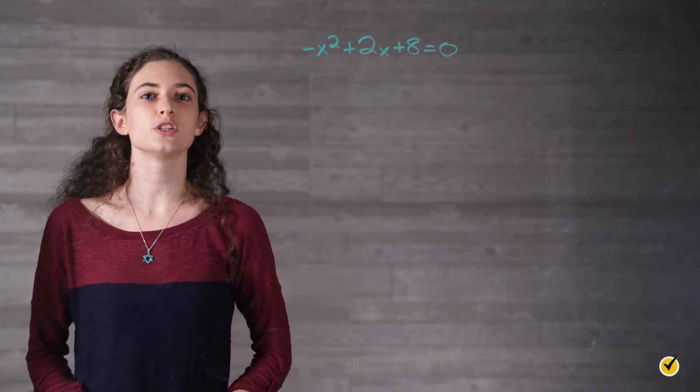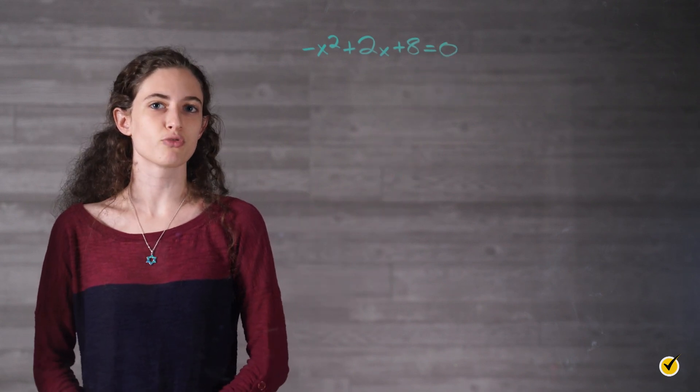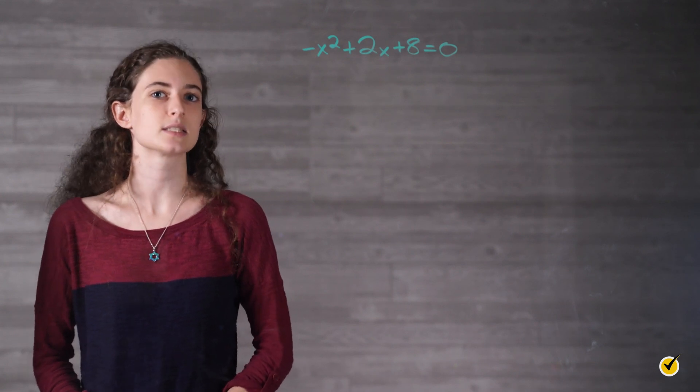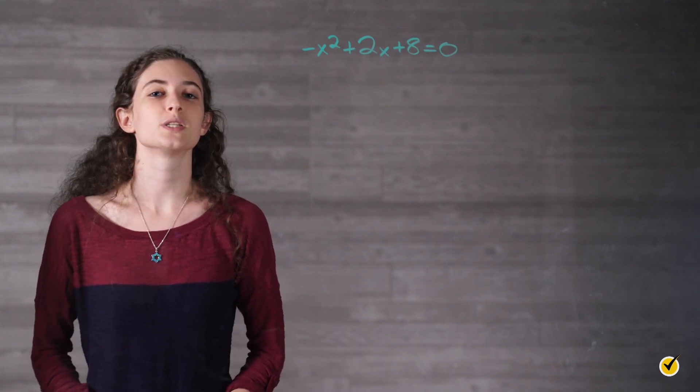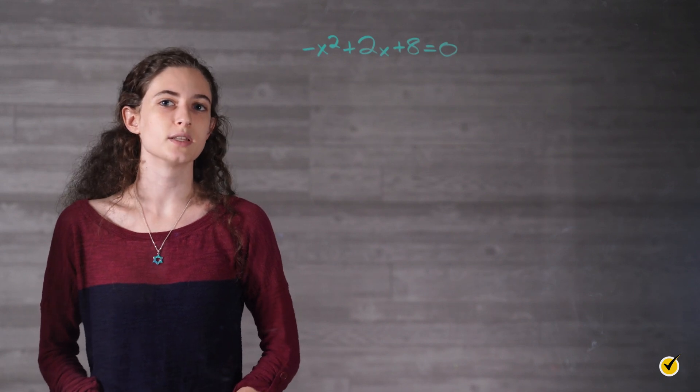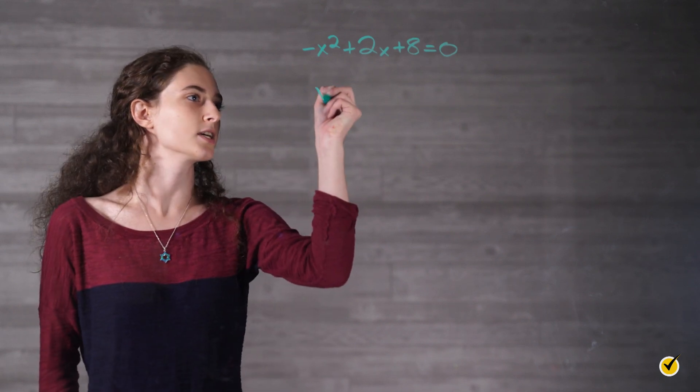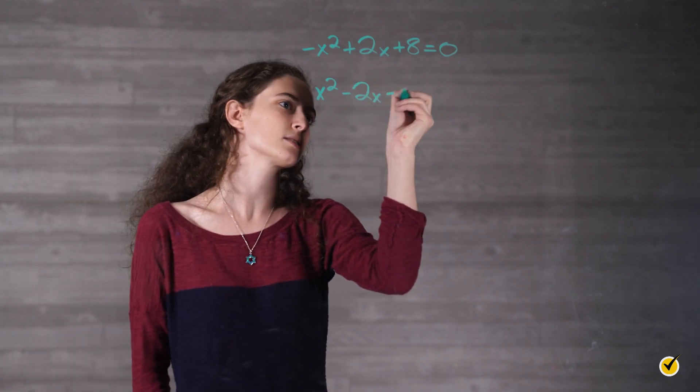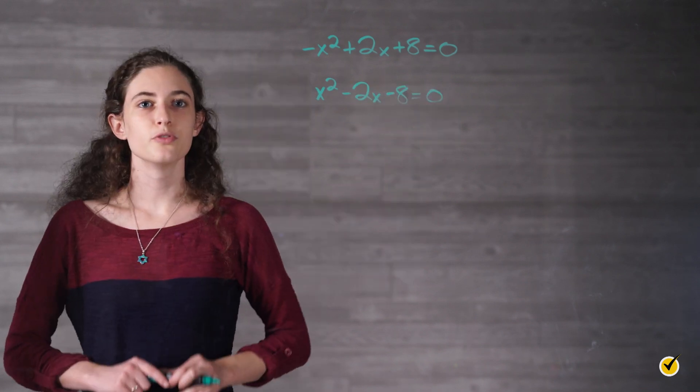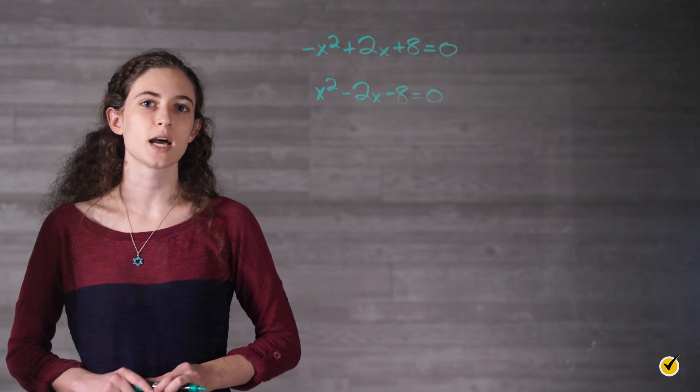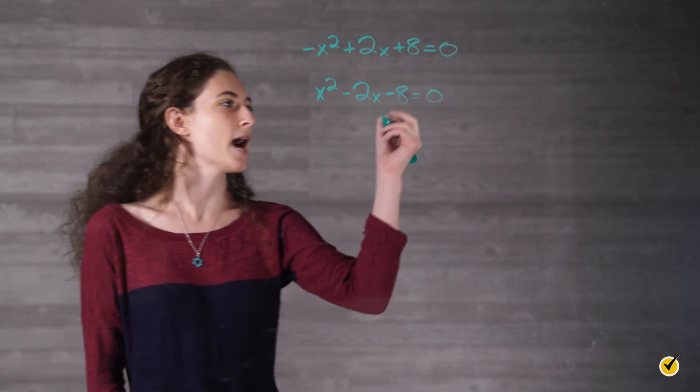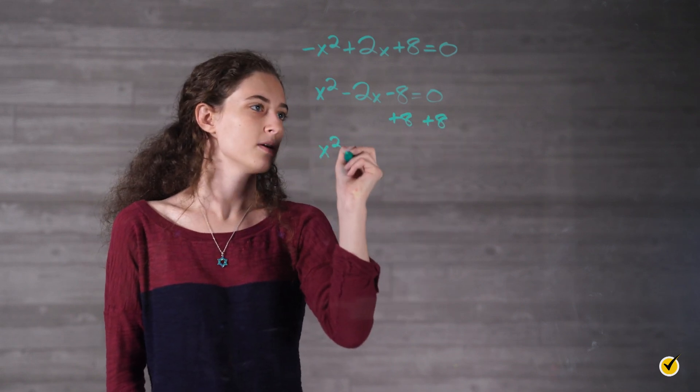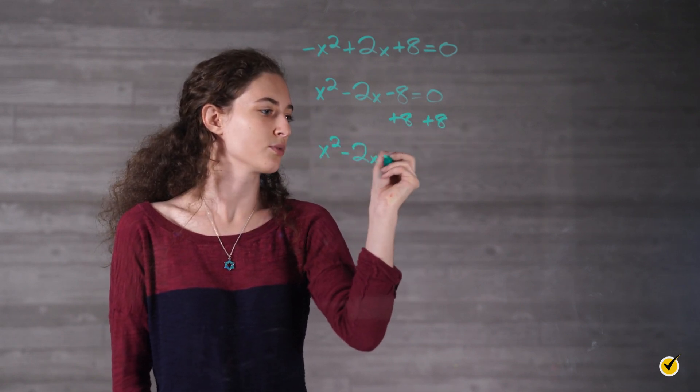To complete the square, the equation needs to not only be in standard form, but the coefficient on the squared term needs to be positive instead of negative. So we divide all terms by negative 1 to get ready. This gives us x squared minus 2x minus 8 equals 0. First, move the constant term to the other side by itself. For this, we'll add 8 to both sides. This gives us x squared minus 2x equals 8.